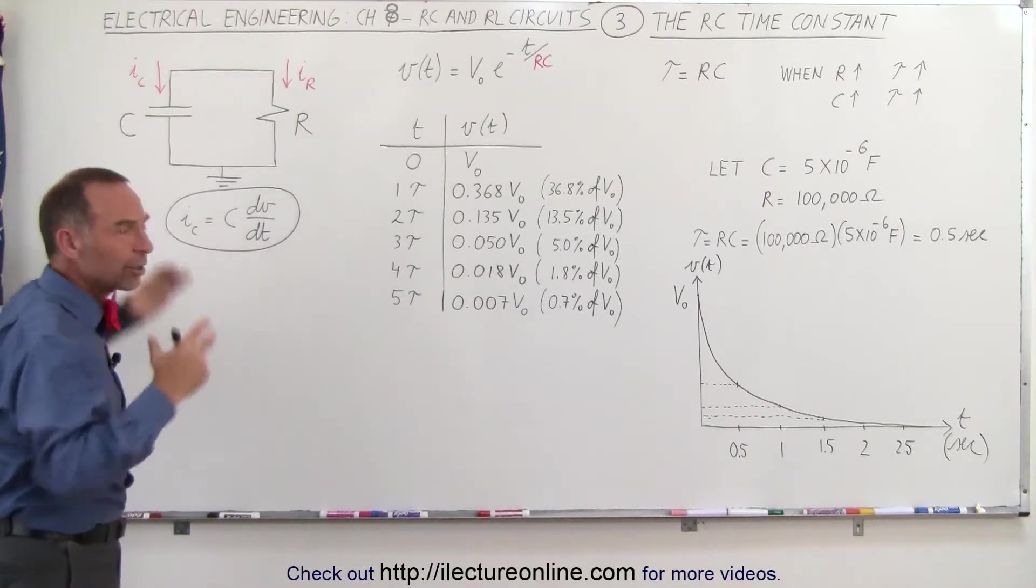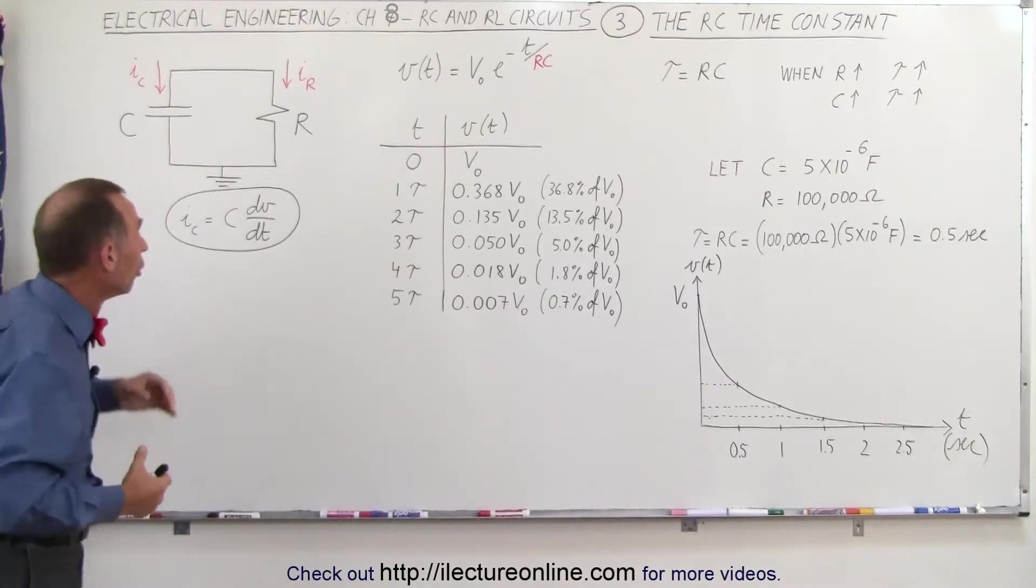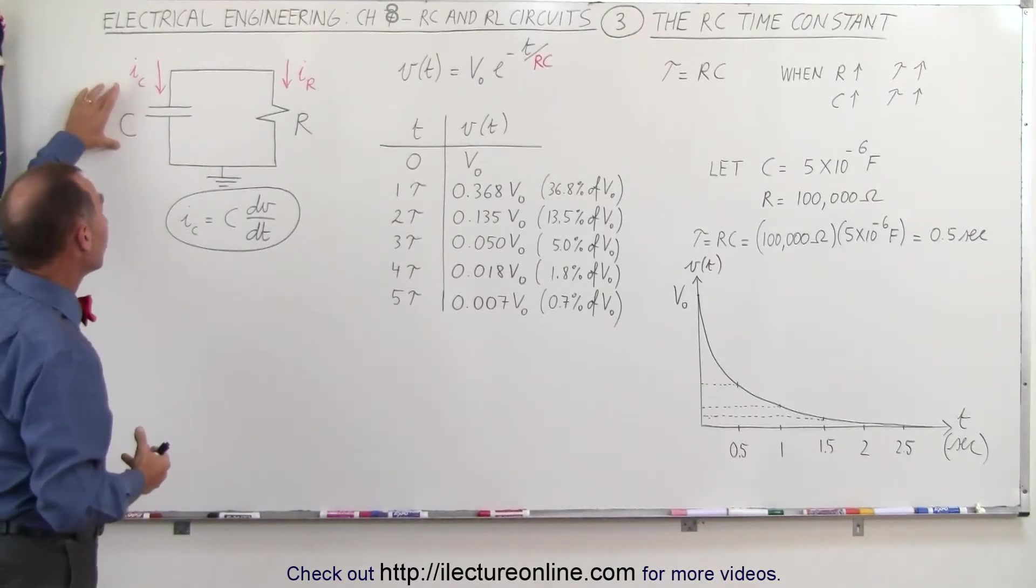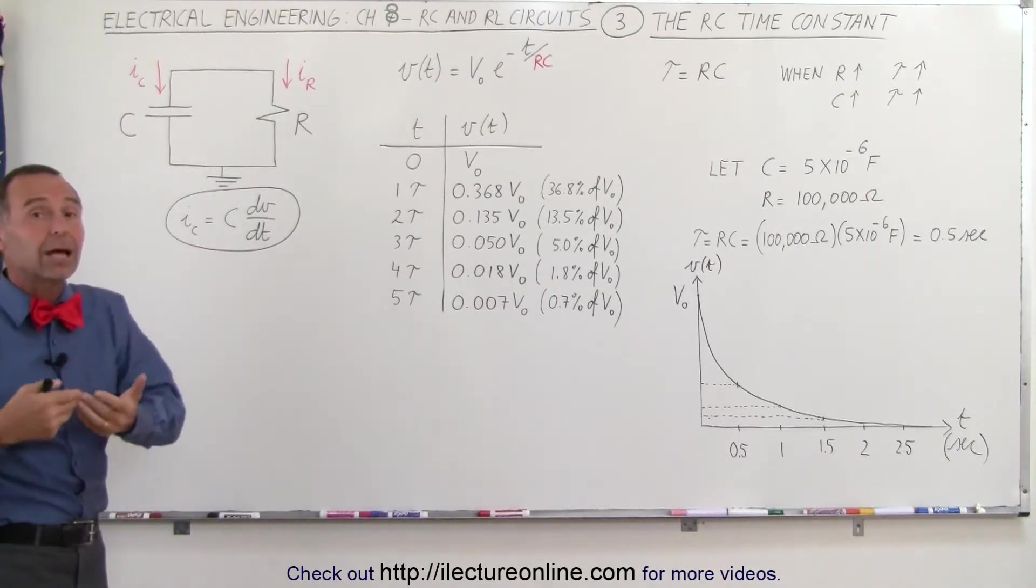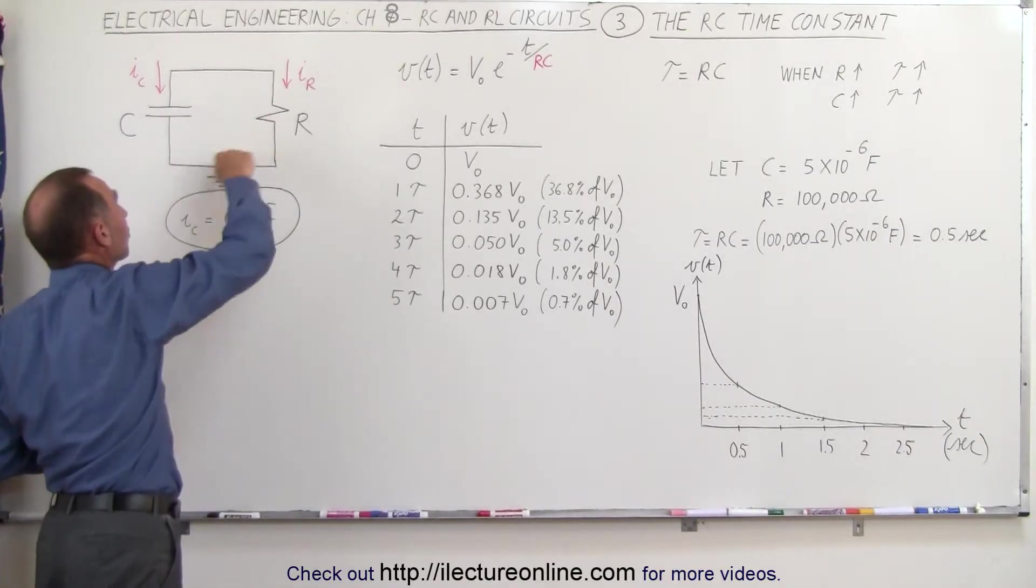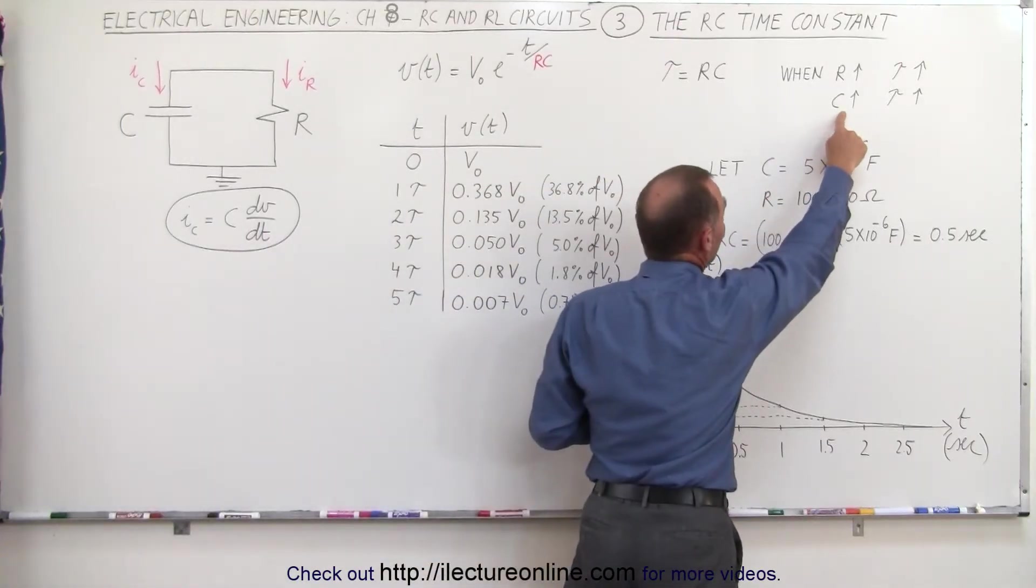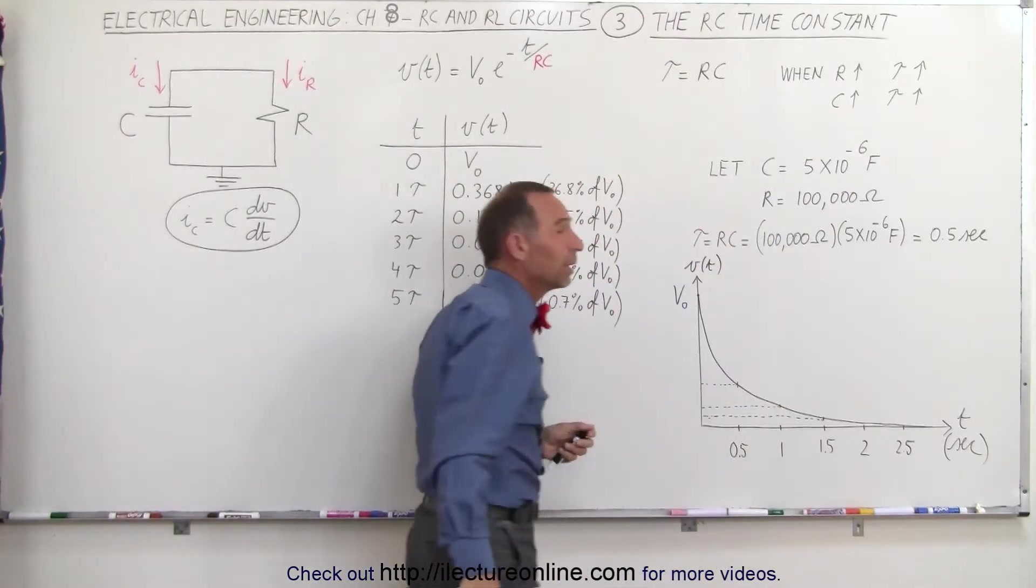Now, imagine if you had a much bigger capacitor, a capacitor that could hold a lot more charge. So, for the same initial voltage, the capacitor would then contain a lot more charge, and therefore, it would take a lot longer for the capacitor to discharge, which means, therefore, that if the capacitance is larger, the time constant would be larger.